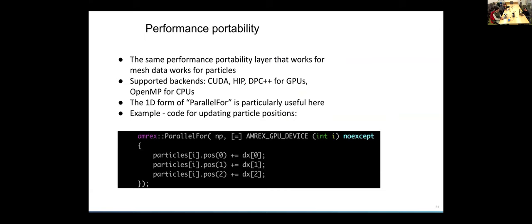In terms of performance portability, the same functions that Weichen has already described, the AMRx parallel_for routines that work for mesh data also work for particle data. There's a little code snippet right there that's basically just updating particle positions. We have pointers to our particle data that are getting captured in this host device lambda by value. And we're using the 1D form of parallel_for here to loop over the particles and different GPU threads are then processing different particles.